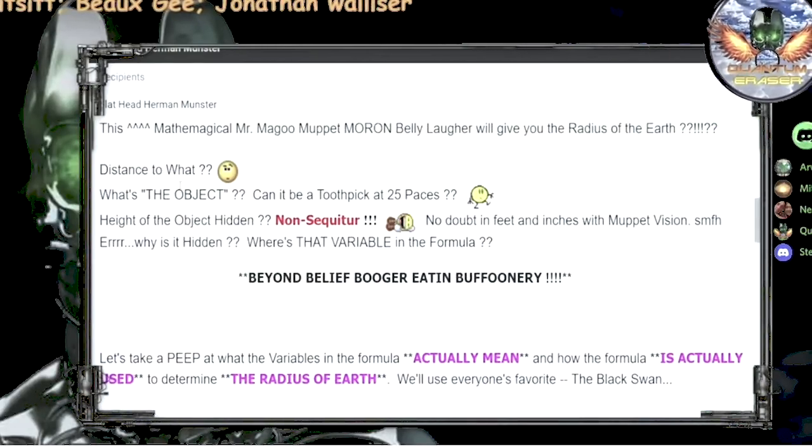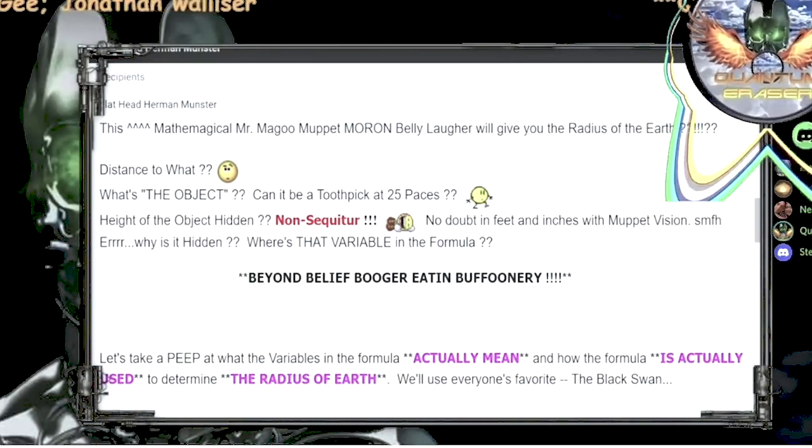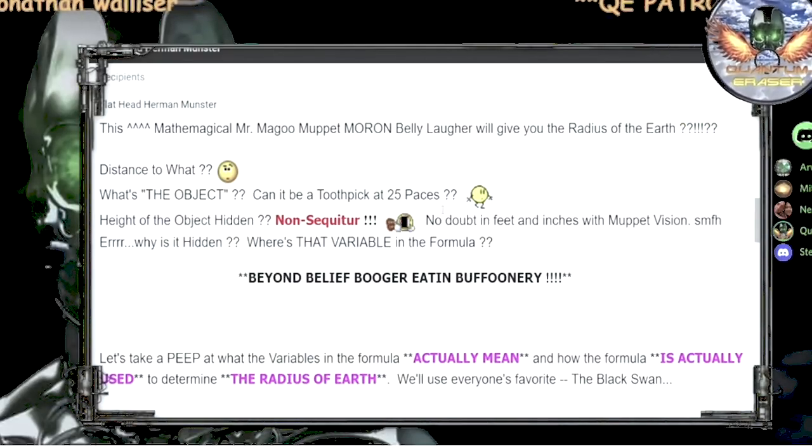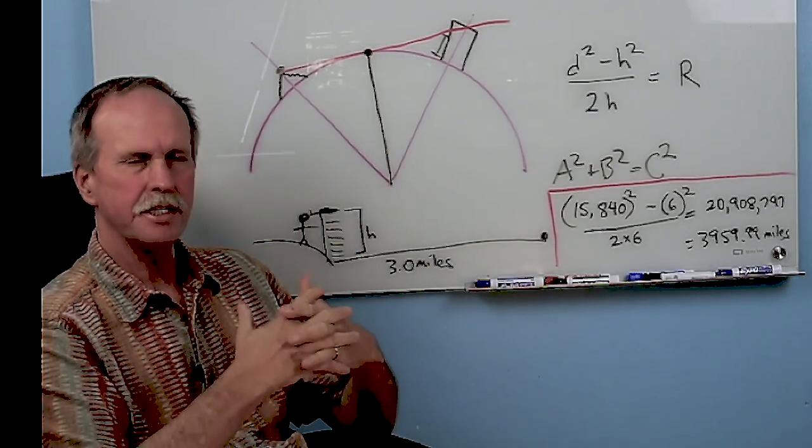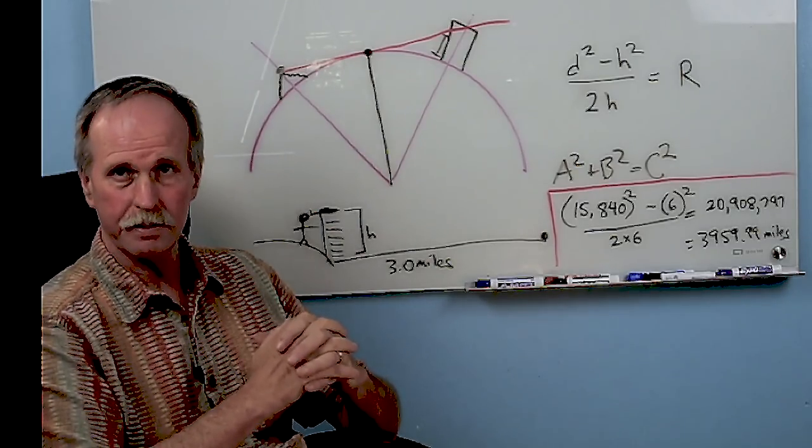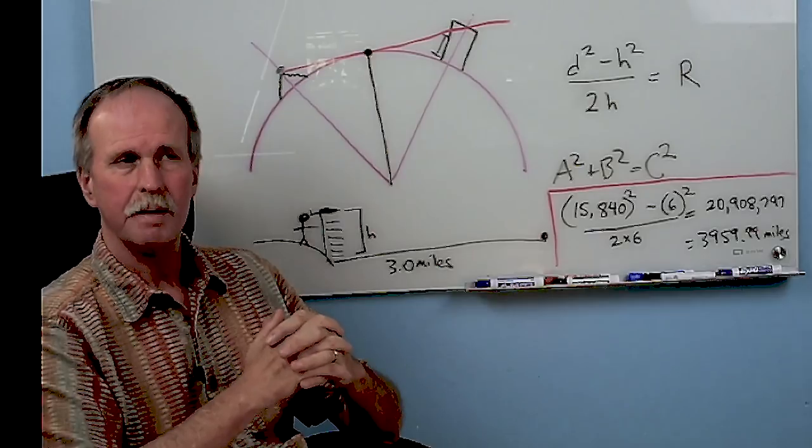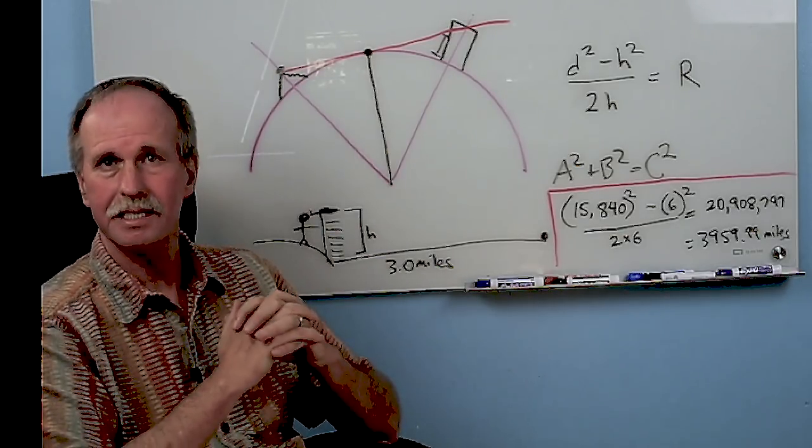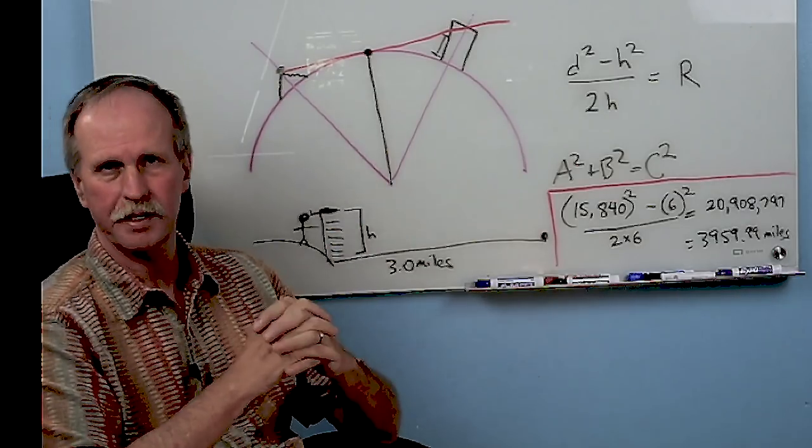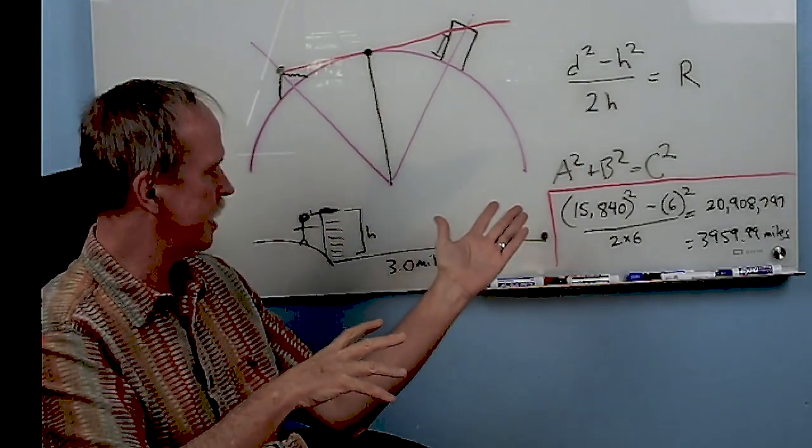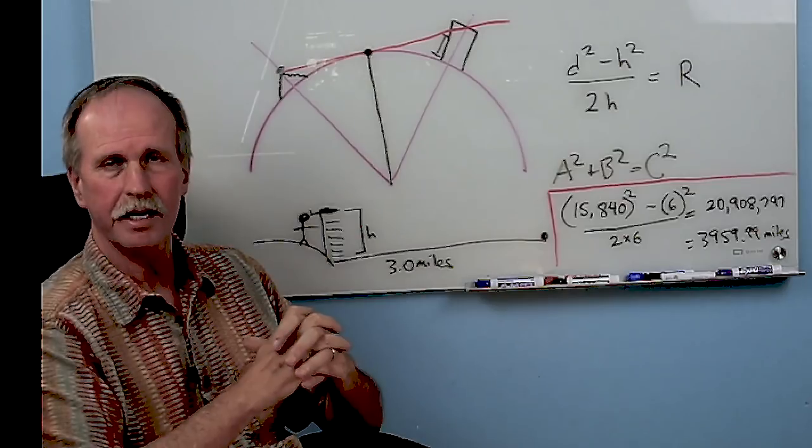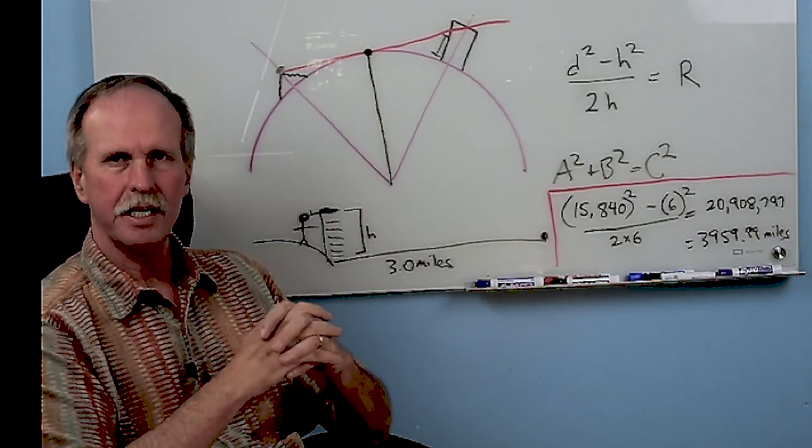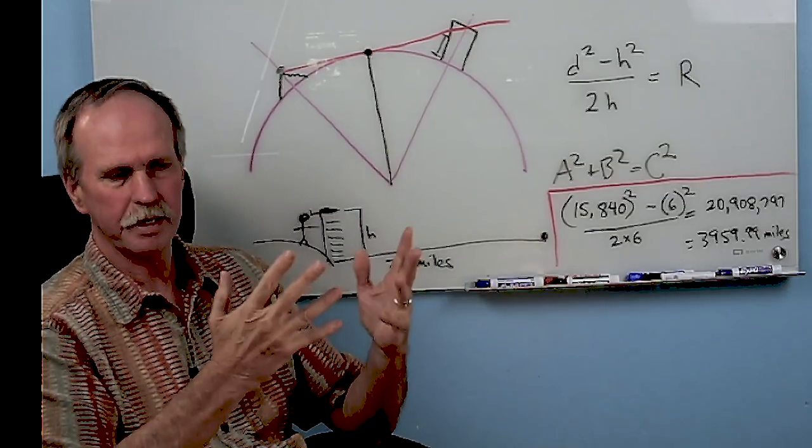Bob the delusional flathead Herman Munster bonehead says that he came up with his own method for deriving the radius of the Earth. So, distance to what? Can it be a toothpick at 25 paces? Will that give me the radius of the Earth? You know, I thought that you had to hear that to believe it. A toothpick at 25 paces.